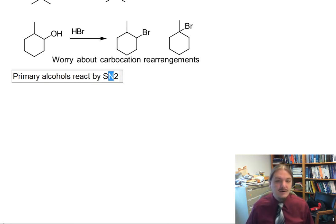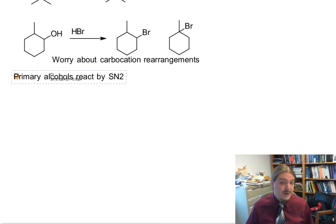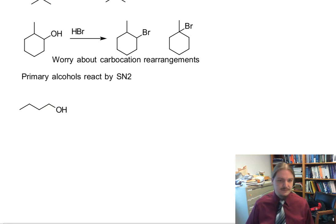Primary alcohols react by the SN2 pathway. So if I have here, like one butanol, and we'll use hydrogen chloride as an example. And it's worth noting that because these acids are actually polar molecules, they're disadvantaged to want to do the SN2 pathway.